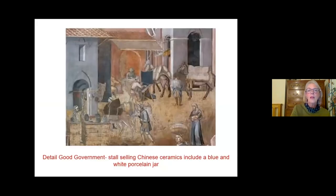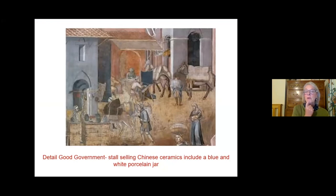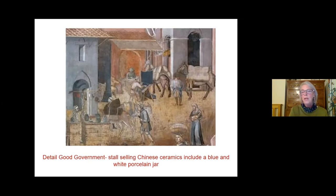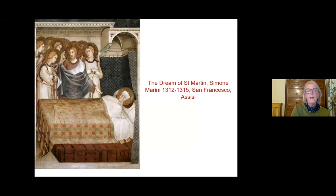Going back to trade again — this is in the good government fresco, on a little store. You can see on the left that there are Chinese ceramics, Chinese porcelain being sold in the store — a tiny detail but so important. There's a celadon vase, a little blue and white ginger jar being sold on the store. This all shows the sophistication and affluence of Siena to the people who were looking at it.